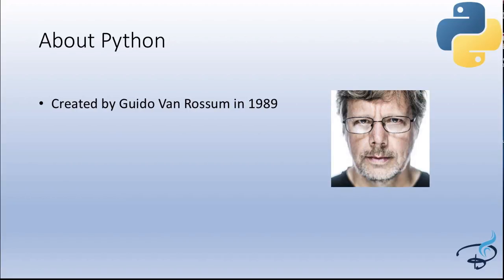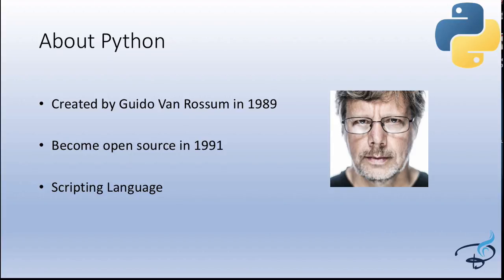Python was created by Guido van Rossum in 1989. Then in 1991, Python became open source, which means it was made available to everyone. It is a scripting language, and what that means is that a scripting language doesn't need any compiler.